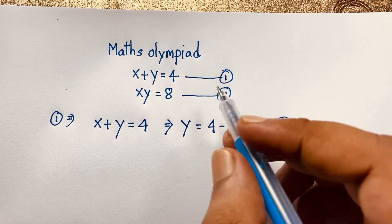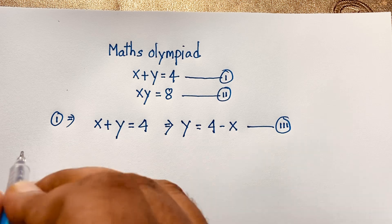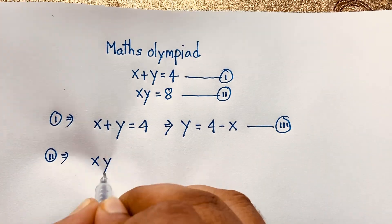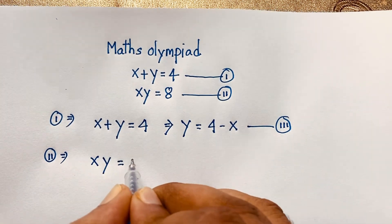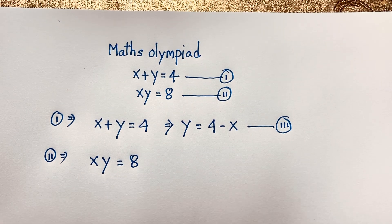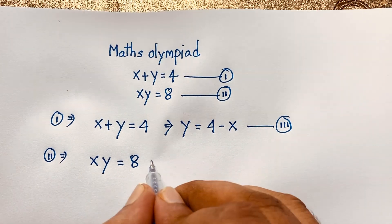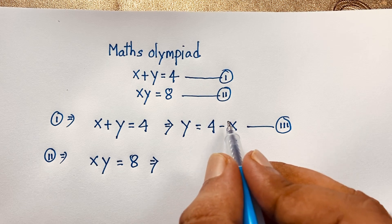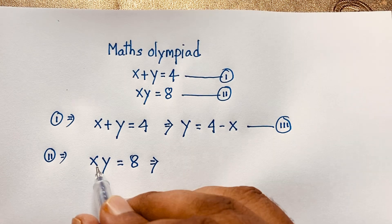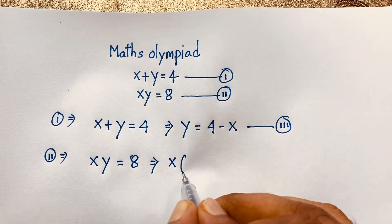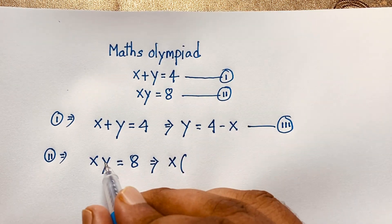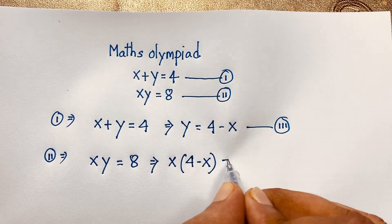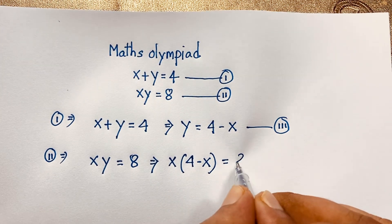Now, our second equation: xy is equal to 8. Recall that y equals 4 minus x. So I put this value here. It will be x times (4 minus x) is equal to 8.